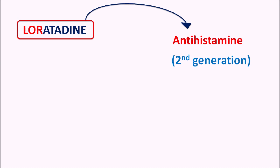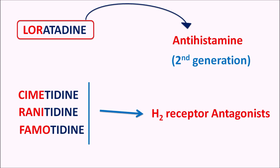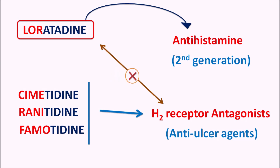We have a few drugs with a similar suffix, such as cimetidine, ranitidine, and famotidine. All these drugs are H2 receptor antagonists, so they are classified as anti-ulcer agents but are not anti-allergic drugs. There is no relation between loratadine and cimetidine even though they have similar suffixes. Loratadine has the spelling T-A-D-I-N-E, while cimetidine, ranitidine, and famotidine have T-I-D-I-N-E. This is the key difference between H1 receptor antagonists like loratadine and H2 receptor antagonists like cimetidine, ranitidine, and famotidine.